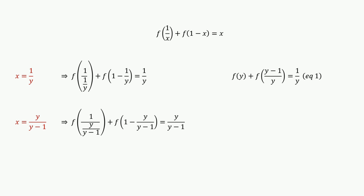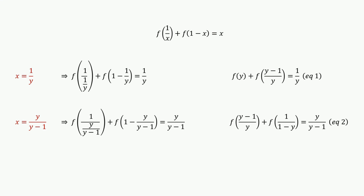Simplifying this, we have the second equation: f of (y minus 1) over y plus f of 1 over (1 minus y) equals y over (y minus 1).